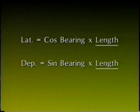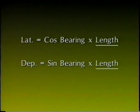Currently, the computation of latitudes and departures is seldom required for surveying applications. However, there are instances where being able to compute station coordinates using this method may prove beneficial. You should be familiar with the following formulas: the latitude of a line is equal to the cosine of the bearing times the length of the course, and the departure of a line is equal to the sine of the bearing times the length of the course.